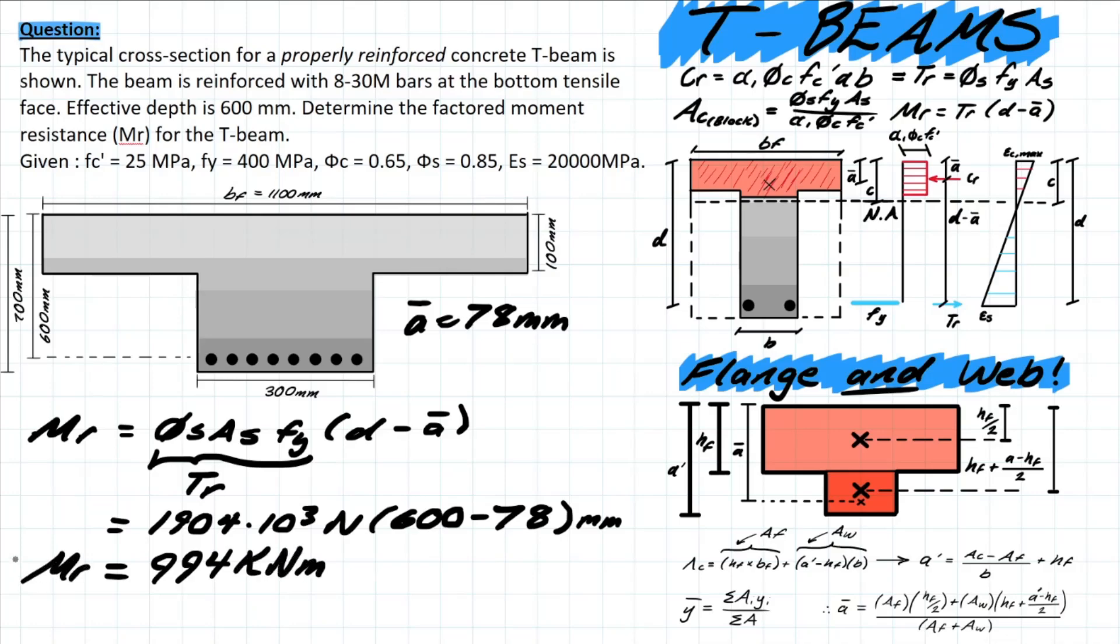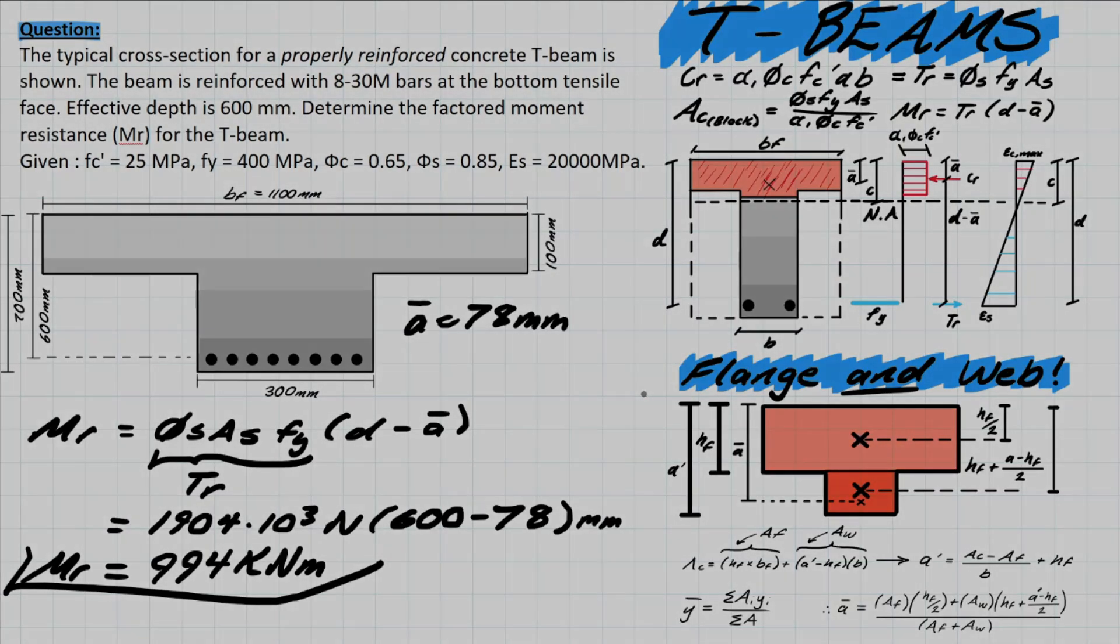For your MR value, and that is it for this t-beam problem. Very similar to the previous one, but you just need to think a little bit harder about what's going on with the compressive block and where that centroid is. Hope this helped, thanks for watching!